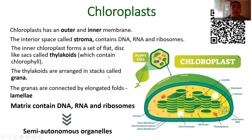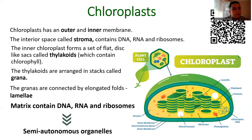Let's discuss the structure of chloroplasts. Chloroplasts are also double-membrane organelles with an outer and inner layer. The inner space is called the stroma, which also contains DNA, RNA, and ribosomes — meaning they can produce their own protein. That is why chloroplasts are also semi-autonomous organelles. Together with mitochondria, they are the two main semi-autonomous organelles. The inner membrane of chloroplasts forms a set of flat disc-like sacs called thylakoids, which contain chlorophyll. A stack of thylakoids is called a granum, and grana are connected by elongated folds called lamellae.